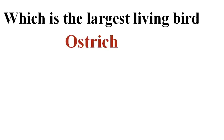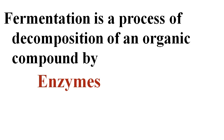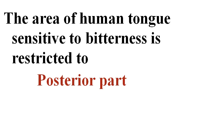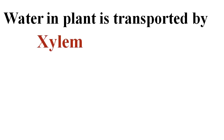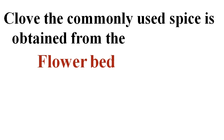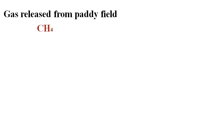The largest living bird is the ostrich. Fermentation is a process of decomposition of an organic compound by enzymes. The area of the human tongue sensitive to bitterness is restricted to the posterior part. Water in plants is transported by xylem. Clove, the commonly used spice, is obtained from the flower bud. Gas released from paddy fields is methane.